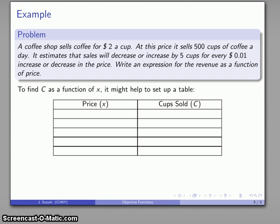This is a table of data and we're going to do two things. We're going to collect a couple of examples of price and cups sold, and then we'll do a little bit of algebra to try and see what the relationship between the two of them is. I do know that at a price of $2 a cup I sell 500 cups of coffee, so I can enter that in as a table value.